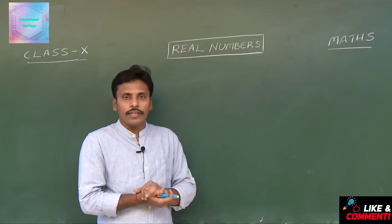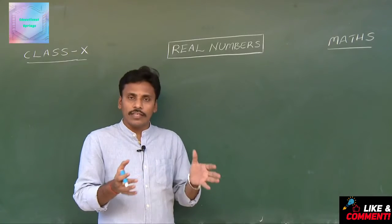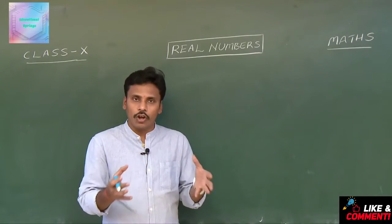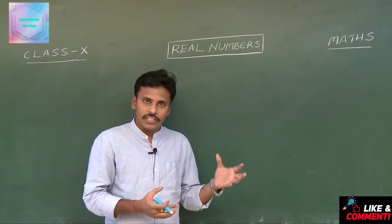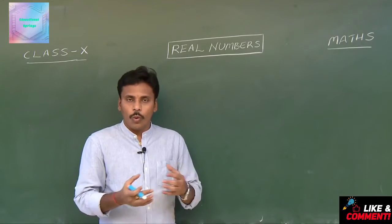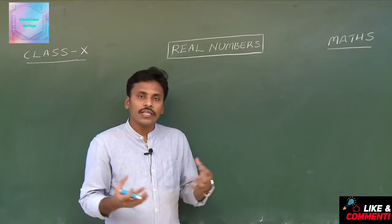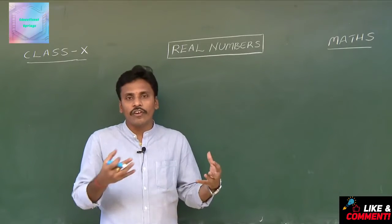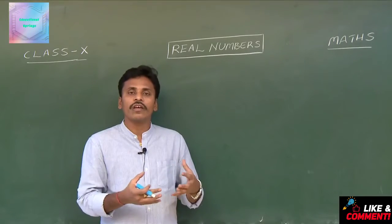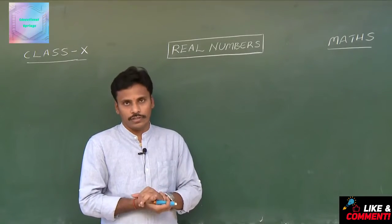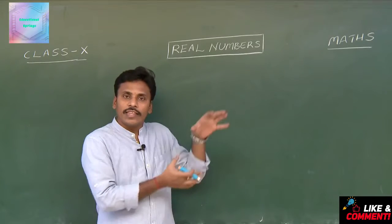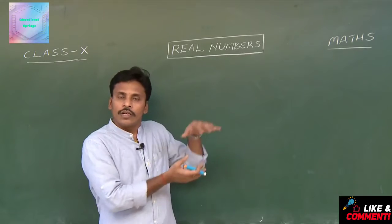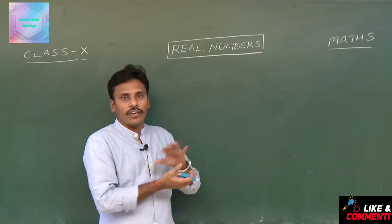To say it simply, real numbers are nothing but a combination of both rational and irrational numbers. The collection of the union of rationals and irrationals together forms real numbers. Let us see the complete analysis of the classification of numbers with real numbers.